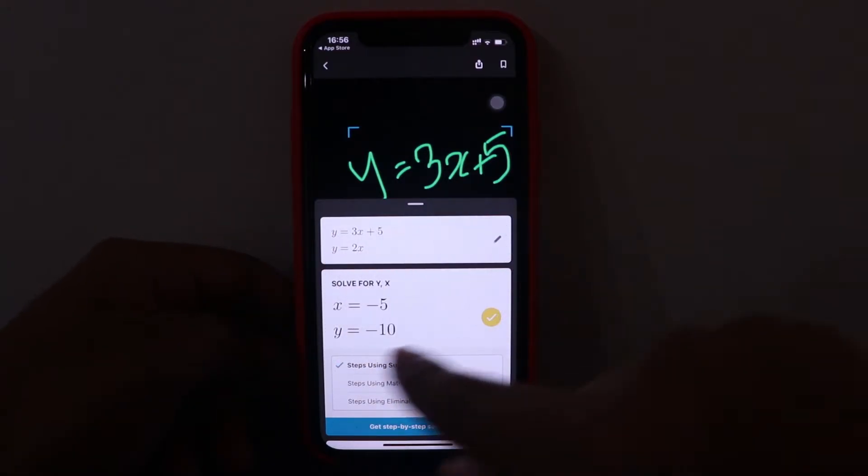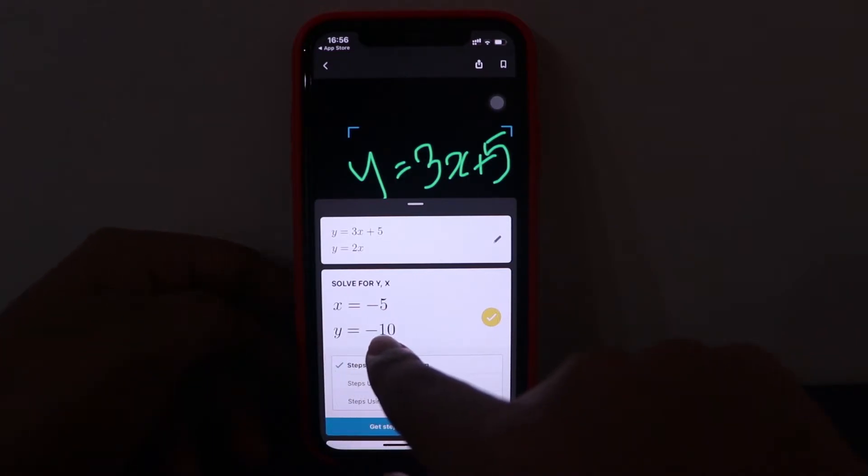So let me just search and here it has detected the equation y equal to 3x plus 5 and y equal to 2x. And here's the solution x equal to minus 5 and y equal to minus 10.